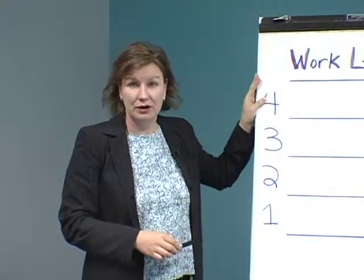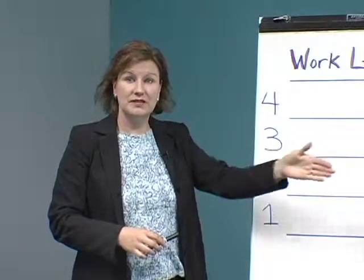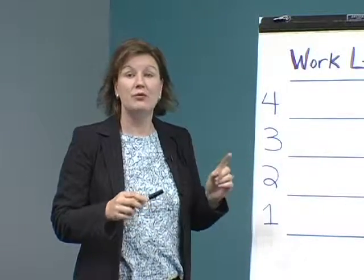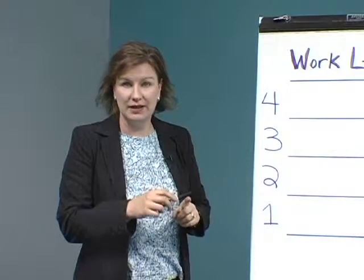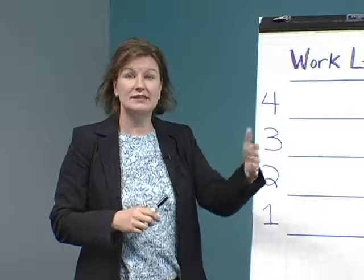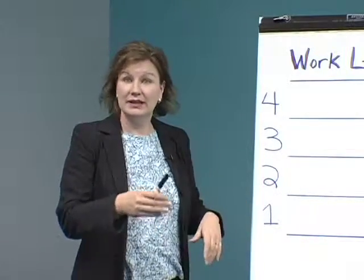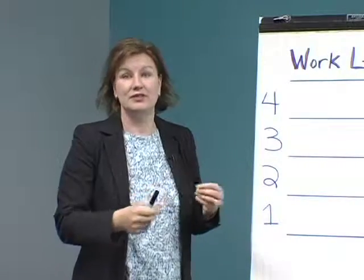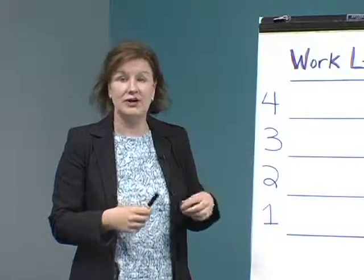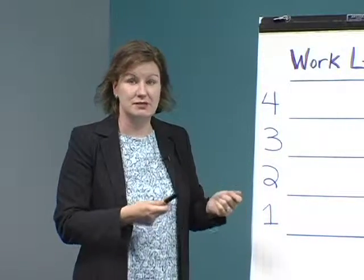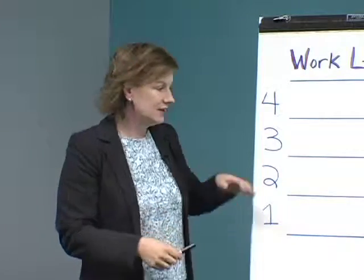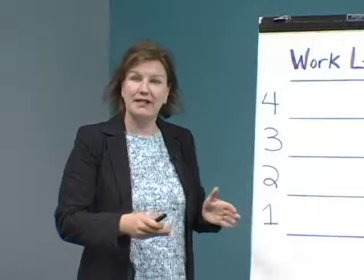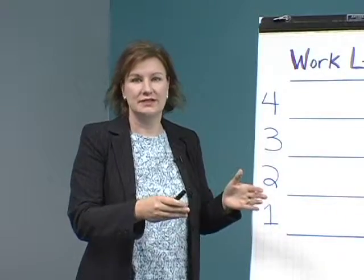At level 4, we're again dealing with these serial pathways, however we have more than one and we have to coordinate them. Not only does A lead to B lead to C, but 1 leads to 2 leads to 3, and at some point they intersect and I have to deal with that intersection. So I have to balance my resources among multiple serial pathways. At level 3, I may have multiple serial pathways, but I think about them relatively independently.